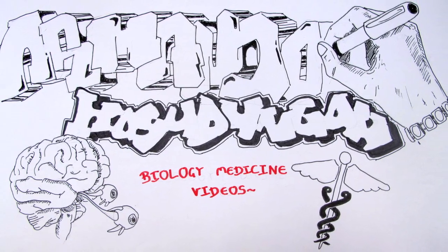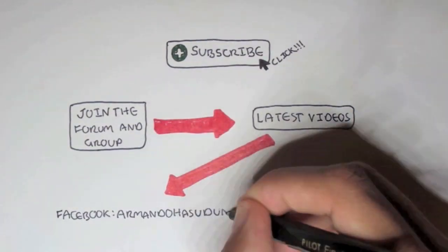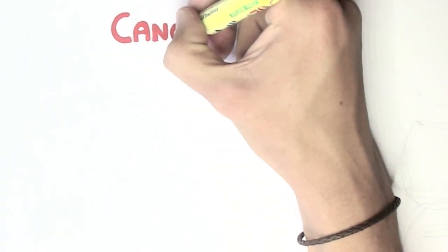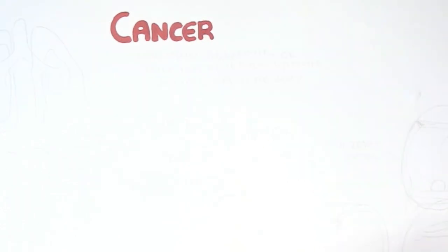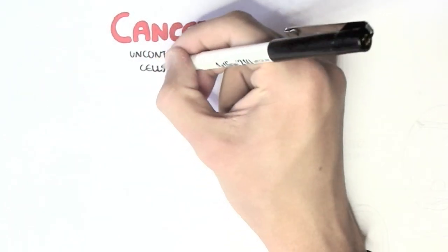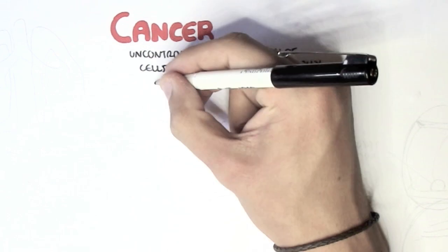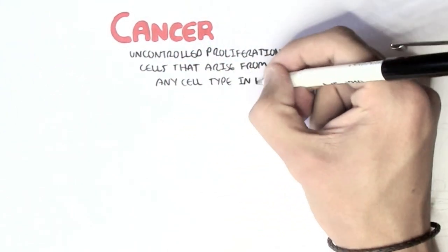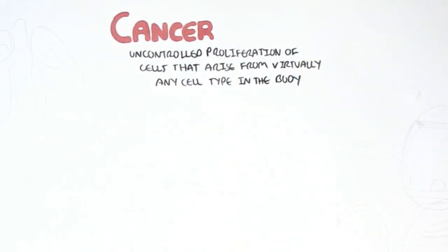Armando Hasrugan biology and medicine videos. Cancer is where you have uncontrolled proliferation of cells that arise from virtually any type of cell in the body. So basically you can have bone cells, skin cells, gut cells, and they can all develop and become cancer cells.